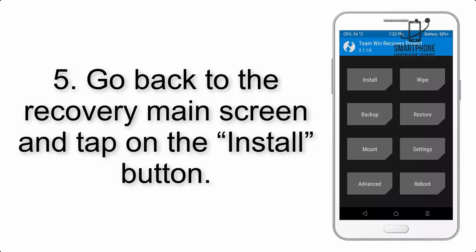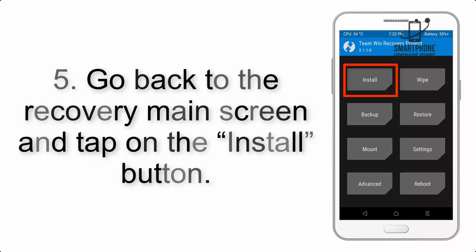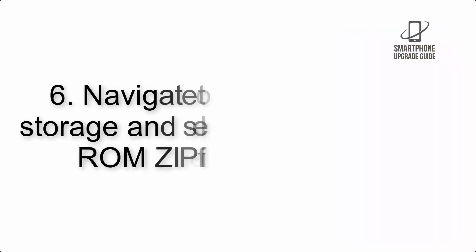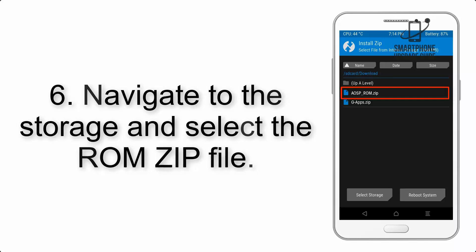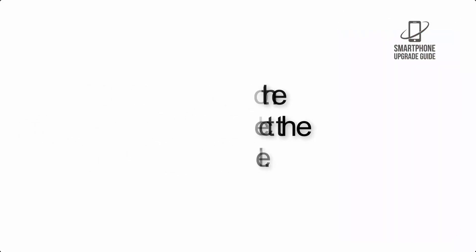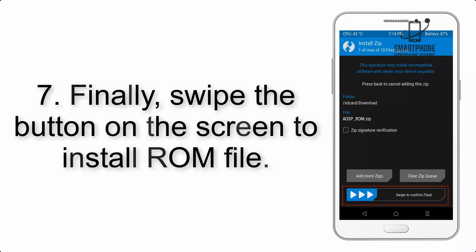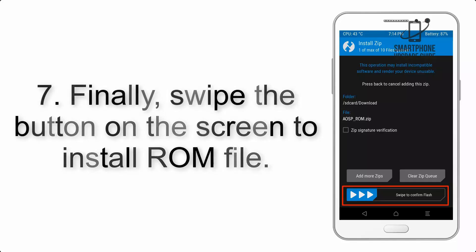Step 5: Go back to the recovery main screen and tap on the Install button. Step 6: Navigate to the storage and select the ROM zip file. Step 7: Finally, swipe the button on the screen to install the ROM file.